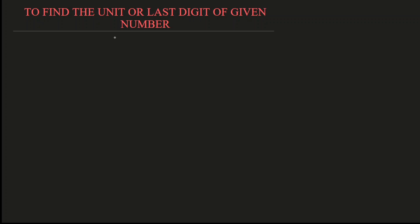Last digit means what? In any number, whenever you are asked to find the unit digit or last digit, the number must be divided by 10. The last digit must be a number from 0 to 9. If they ask for the last two digits, you have to divide it by 100. If they ask for three digits, you must divide it by 1000. Now, we will discuss how to find the unit or last digit of a given number.